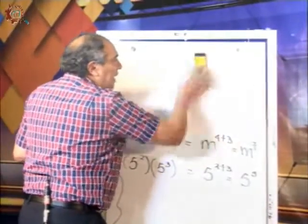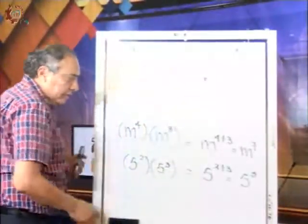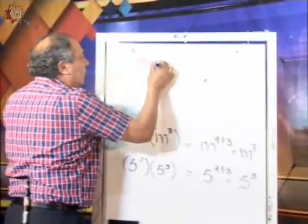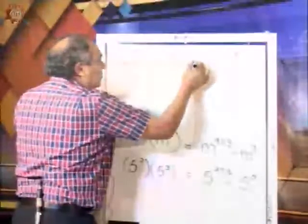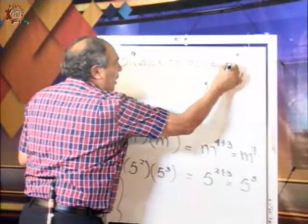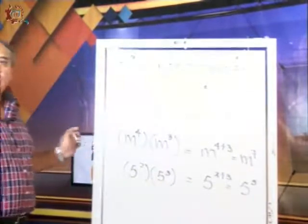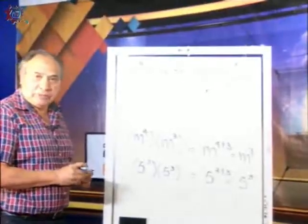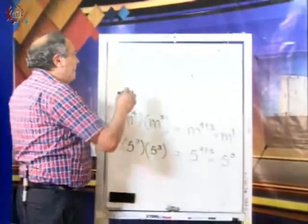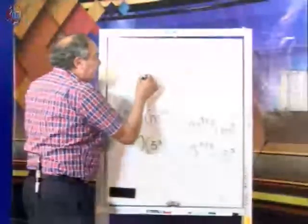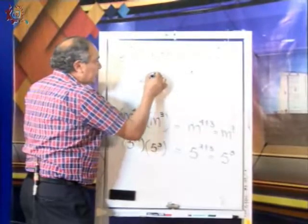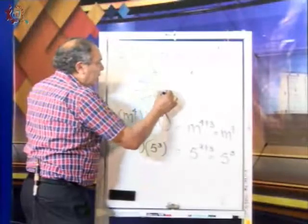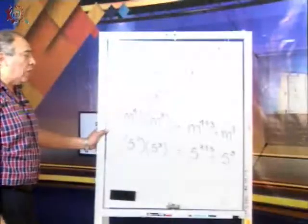La segunda ley de los exponentes es la división de potencias de la misma base. Recordemos que cuando las bases no son las mismas, no podemos efectuar la multiplicación o la división — las bases tienen que ser las mismas. Veamos la división: cuatro a la quinta entre cuatro al cubo.